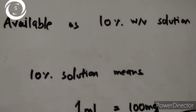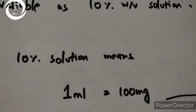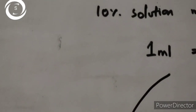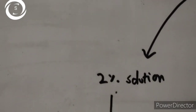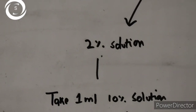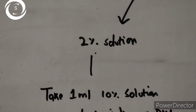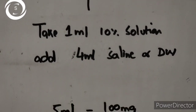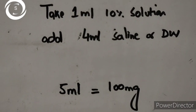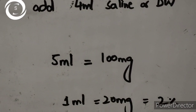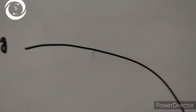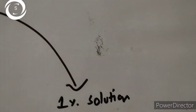A 10% solution means 1 ml contains 100 mg of active ingredient. To make a 2% solution, take 1 ml of the 10% solution — which contains 100 mg — and add 4 ml of saline or distilled water. This gives 5 ml total, still containing 100 mg, so each 1 ml contains 20 mg, which equals a 2% solution.